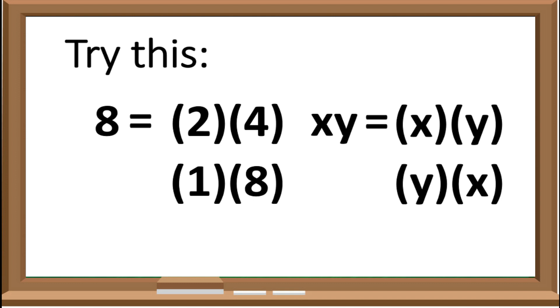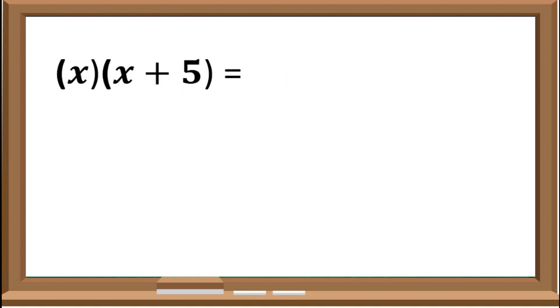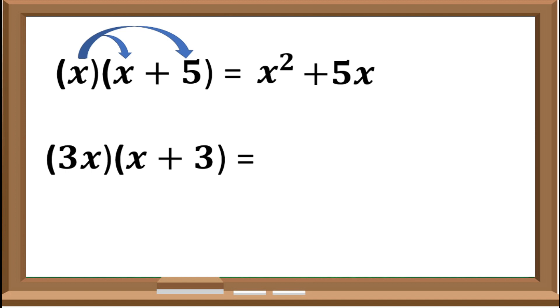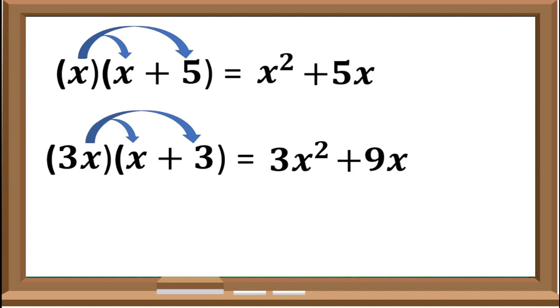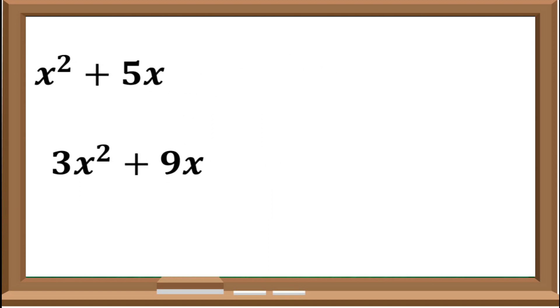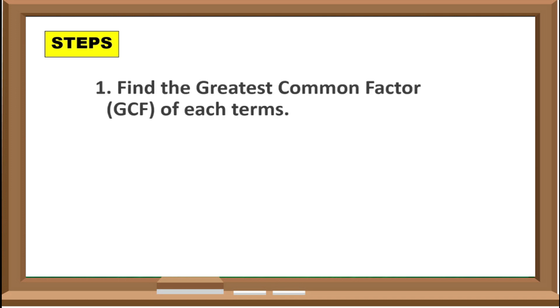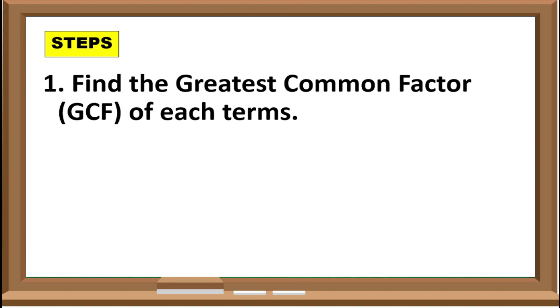The first type of factoring that I will explain is factoring polynomials with common monomial factor. But first, we need to review some concepts in mathematics. What would be the product of x times the quantity of x plus 5? That would be x squared plus 5x. How about 3x times the quantity of x plus 3? That would be 3x squared plus 9x.